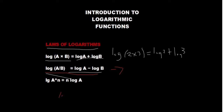The third law: log A to the power N is actually equal to N times log A. This simply means the N is dropped down as a coefficient in front of the log.